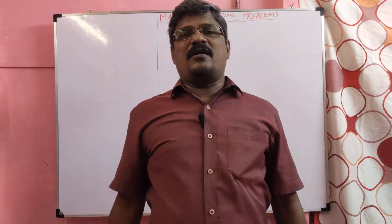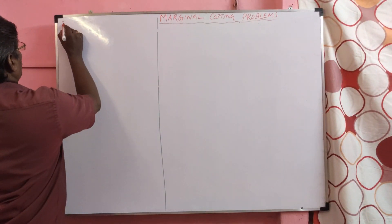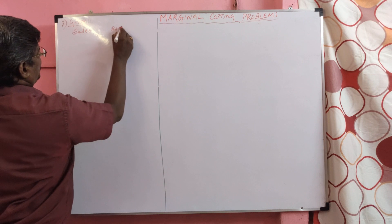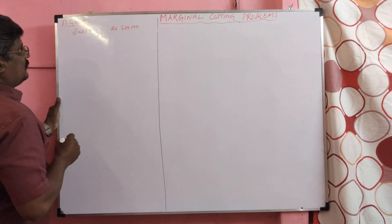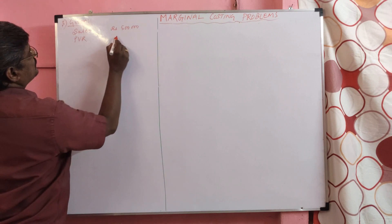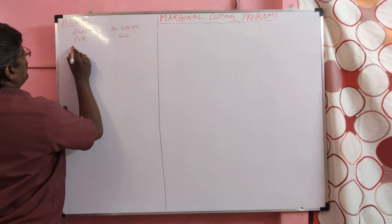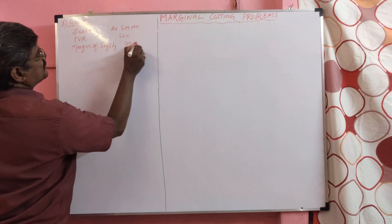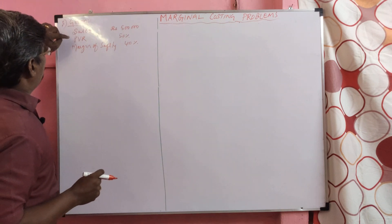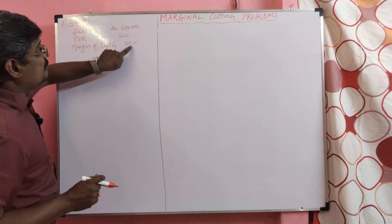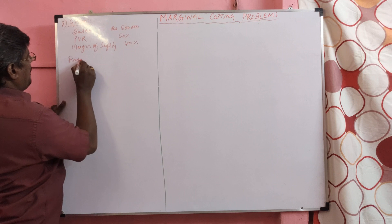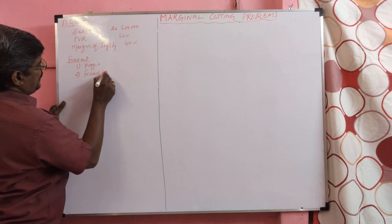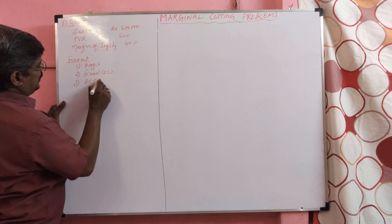Now we are going to see problem number three — a very important problem. Listen carefully. Given: Sales rupees 5 lakh, PVR 50%, Margin of Safety 40%. Find out: 1. Profit, 2. Fixed cost, 3. Breakeven point in rupees.